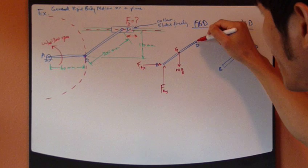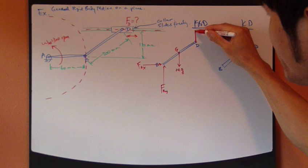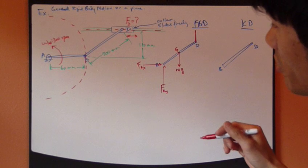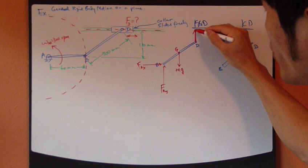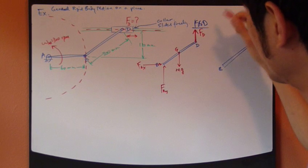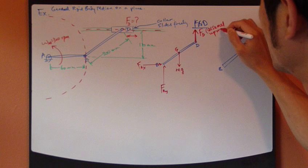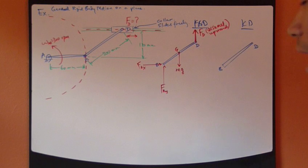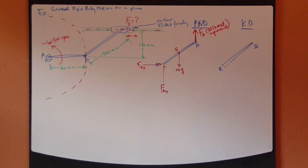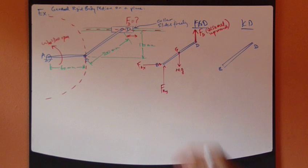And obviously I have the unknown FD. Now whether it points up or down, I don't know. Assume a direction. I'm going to say that this reaction force goes up, FD. Assume upward, and then we come back and check whether this is correct. And that's it for the free body diagram for link BD.